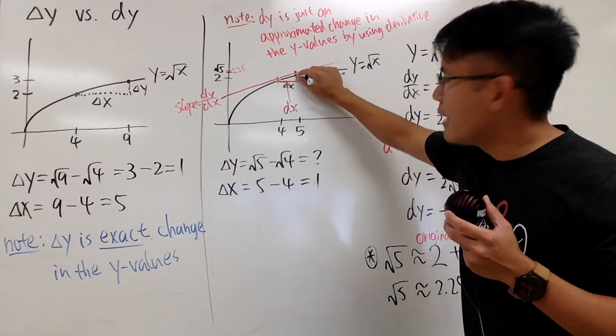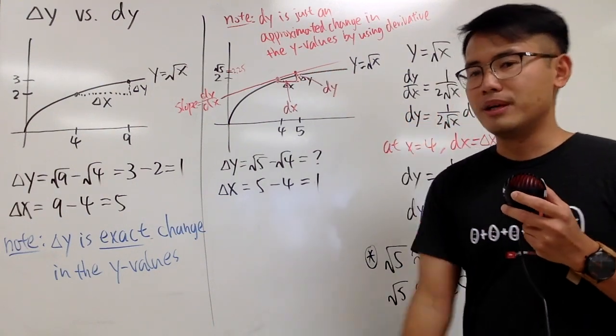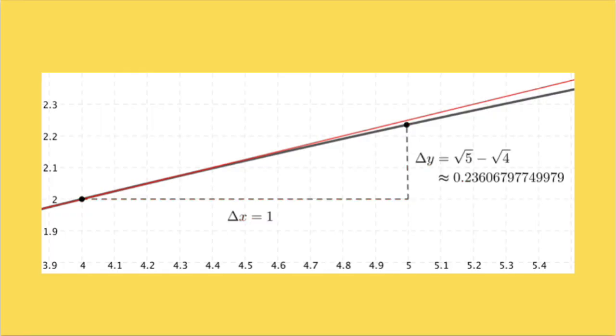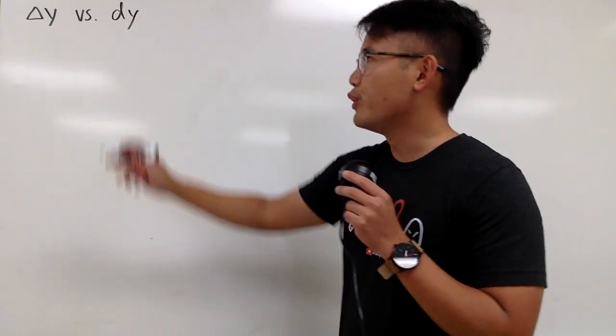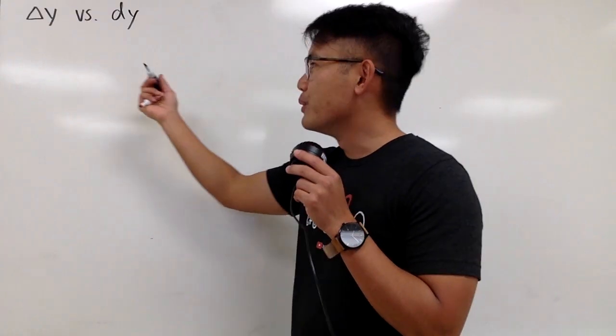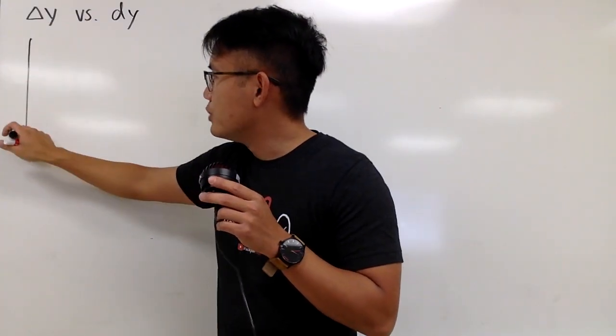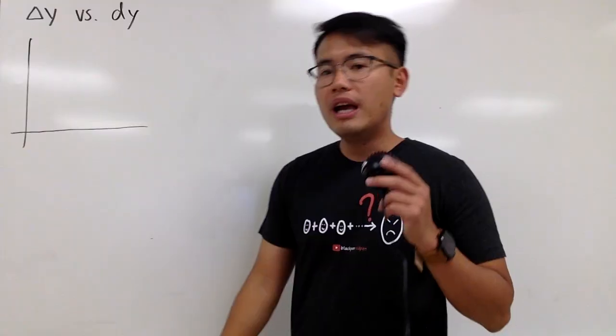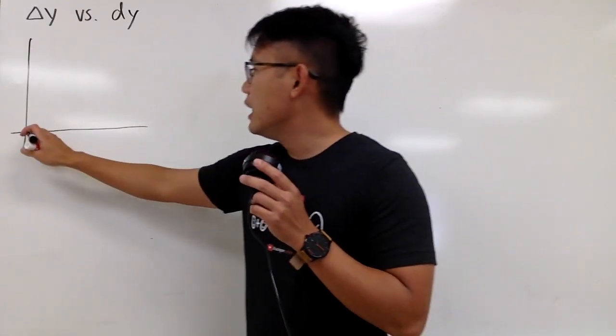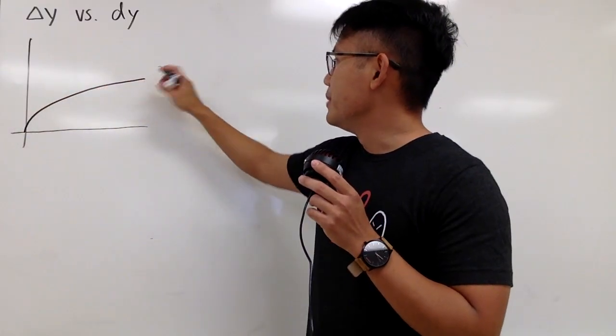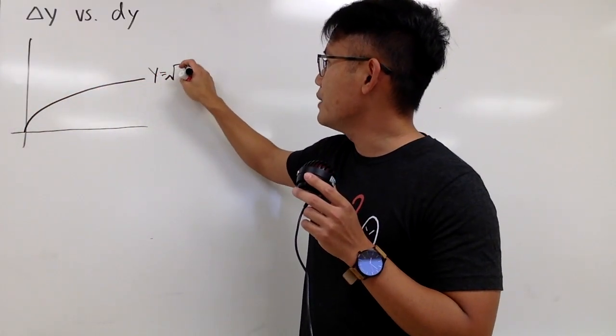The dy and then the delta y, they are just off by a little bit. Okay, in this video I'm going to discuss the difference between delta y and dy. And to do this, I will just begin by drawing a picture for you guys. Let me also pick a specific function to work with for demonstration purpose. Let me just use square root of x, because this is not too easy nor not too difficult.